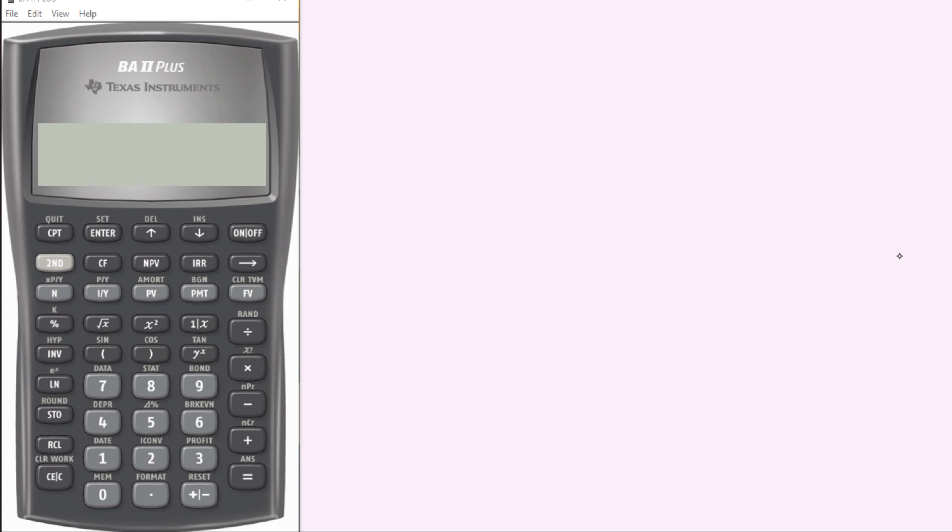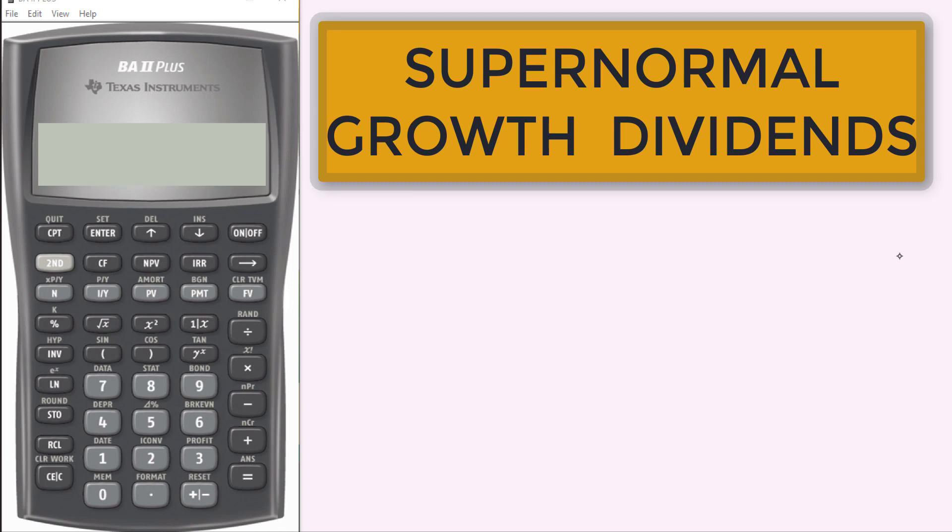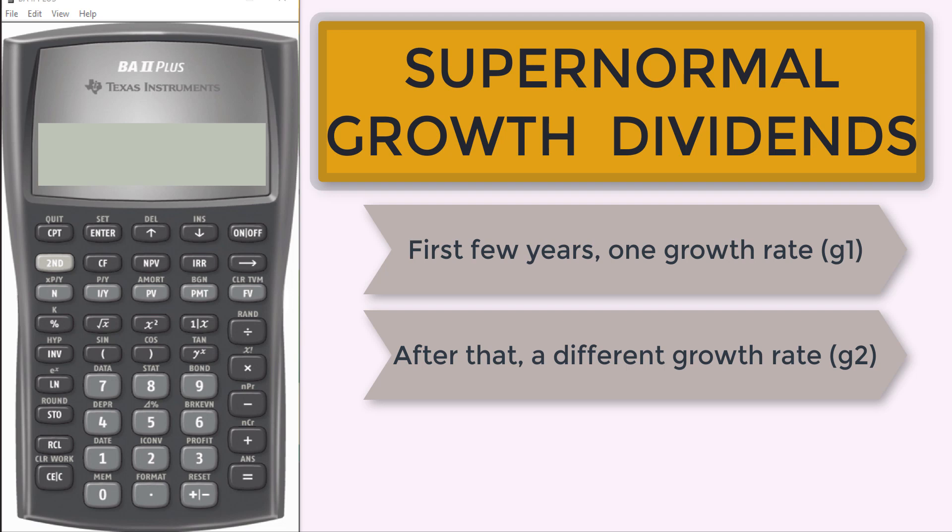In this video, I will show an example of so-called supernormal growth dividend. Supernormal growth dividend is the pattern of future dividends that has two growth stages. For the first few years, the dividends will grow at a very high or supernormal growth rate every year. After that, the growth rate will slow down to some lower percentage increase every year in perpetuity. In something complicated like this, how would we find how much one share of stock is worth today, which is essentially the price per share?